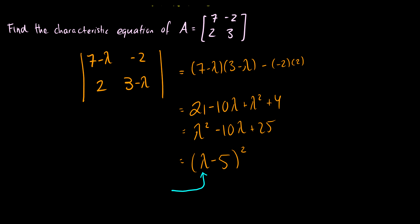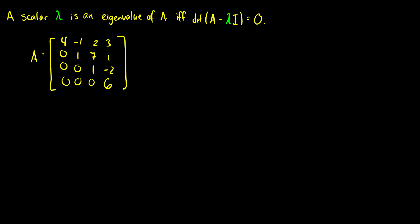Setting (lambda minus 5) squared equal to 0 gives us lambda equal to 5. This is why we use lambda for this variable — a scalar lambda is an eigenvalue of A if the determinant of A minus lambda I is equal to 0.